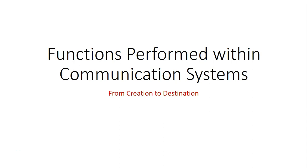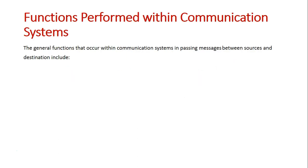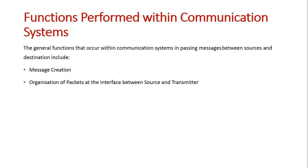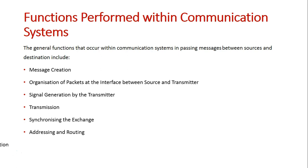We're now going to take a look at functions performed within communication systems. What we're basically going to establish is a number of different steps that are performed from the creation to the destination when a message is transmitted. The general functions that occur within communication systems in passing messages between sources and destinations include: message creation, organization of packets at the interface between source and transmitter, signal generation by the transmitter, transmission, synchronizing the exchange, addressing and routing, error detection and correction, and security and management. We're going to look at these stages one by one.